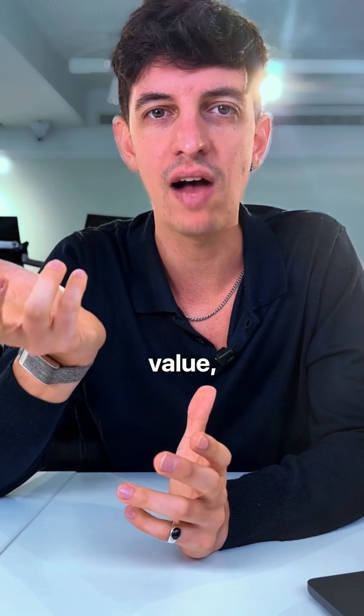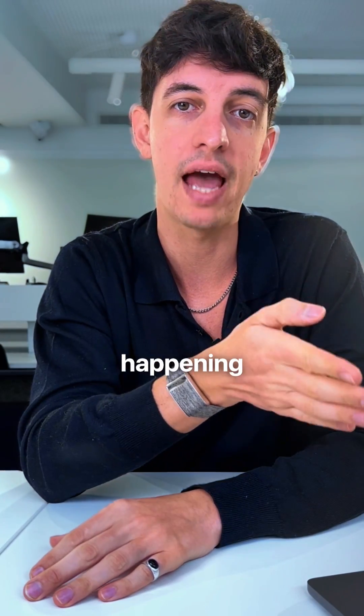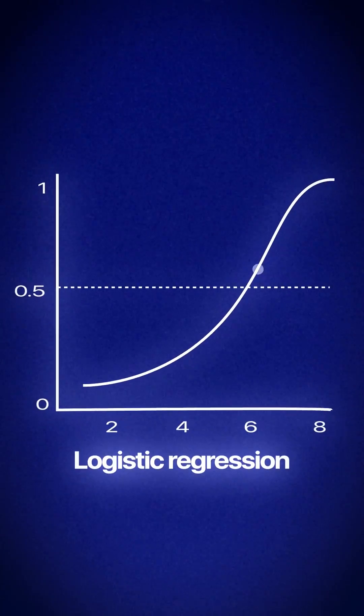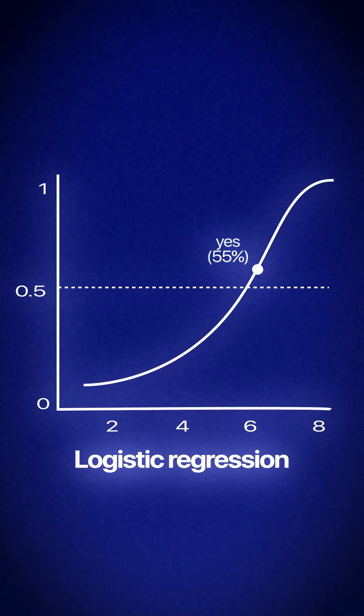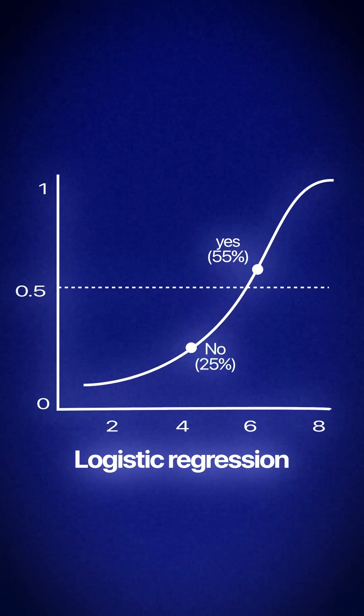Instead of predicting a continuous value, it predicts a probability of something happening. If the probability is higher than 50%, the model says yes, they will default. If it's lower, it says no.